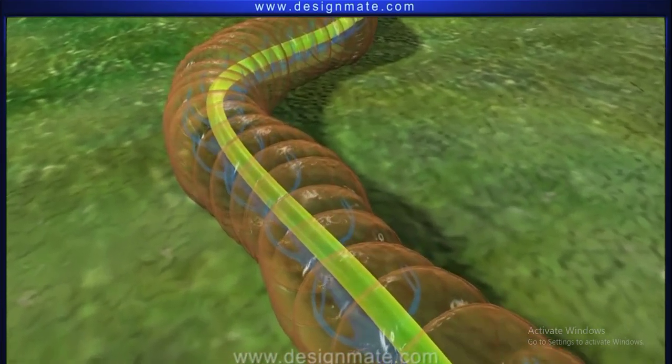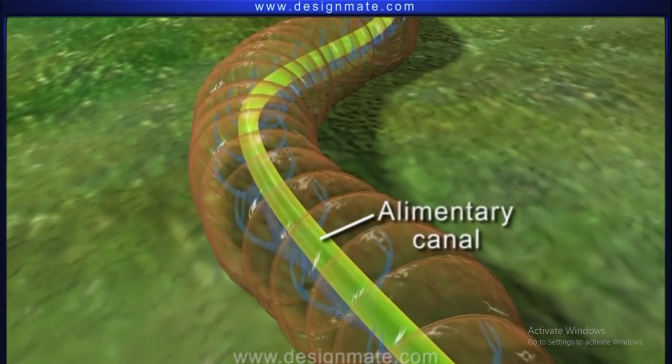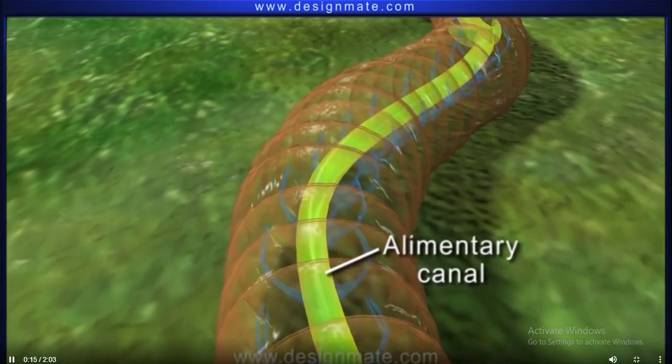If we look inside an earthworm, we see that the alimentary canal is a straight cylindrical tube running along the length of its body.